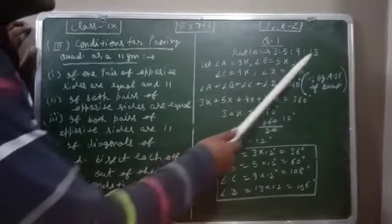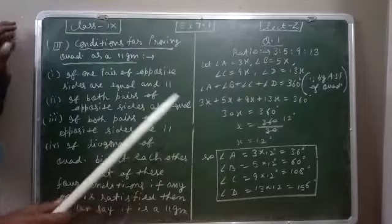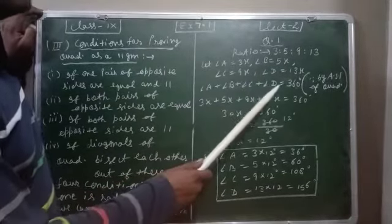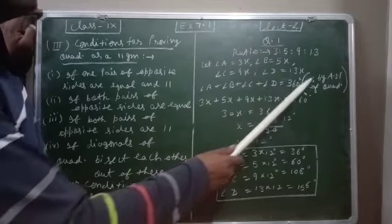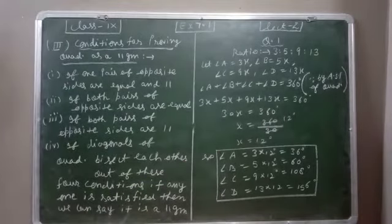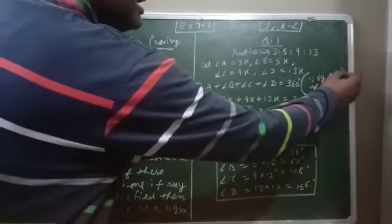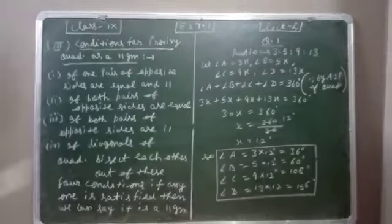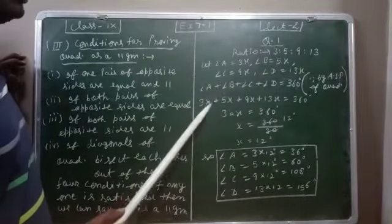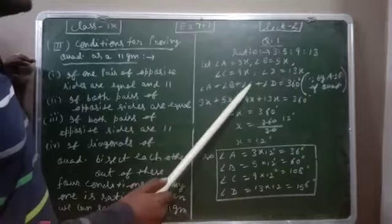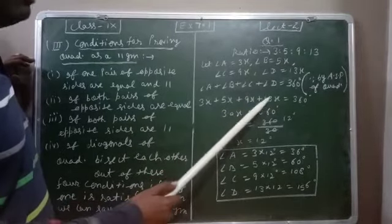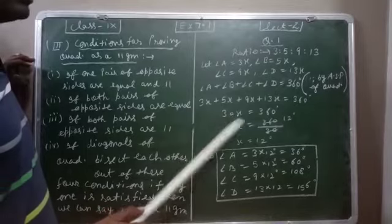Let angle A = 3x, angle B = 5x, angle C = 9x, and angle D = 13x. When we add all the angles — angle A + angle B + angle C + angle D — their sum will be 360°, by the angle sum property of a quadrilateral. In a triangle the sum is 180°, and in a quadrilateral the sum of four angles is 360°.